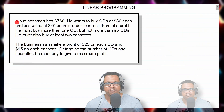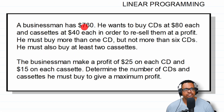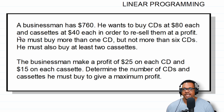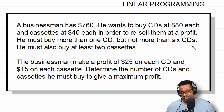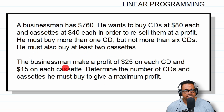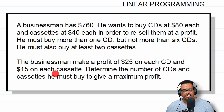So here we have our question. A businessman has $760. He wants to buy CDs at $80 each and cassettes at $40 each in order to resell them at a profit. He must buy more than one CD — this is a constraint — but not more than six CDs, which is another constraint. He must also buy at least two cassettes, which is also a constraint. The businessman makes a profit of $25 on each CD and $15 on each cassette.